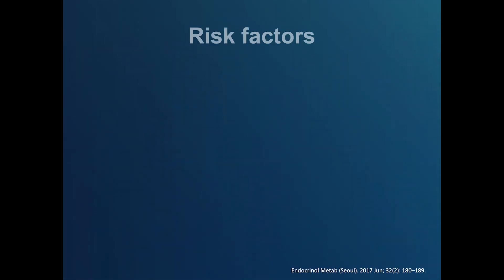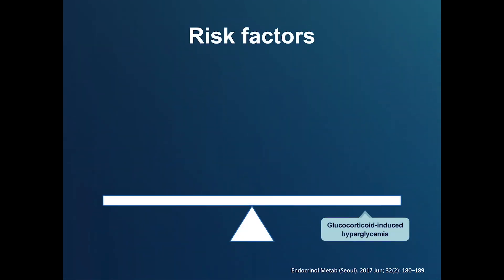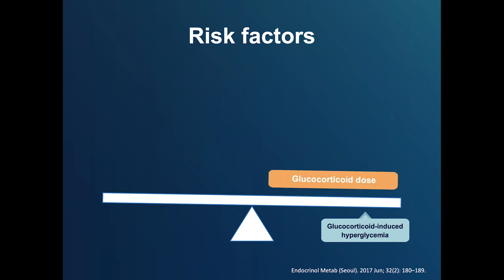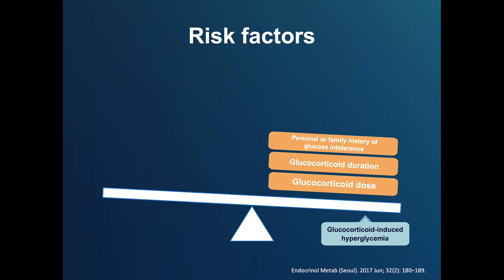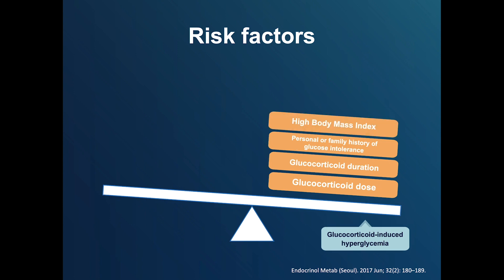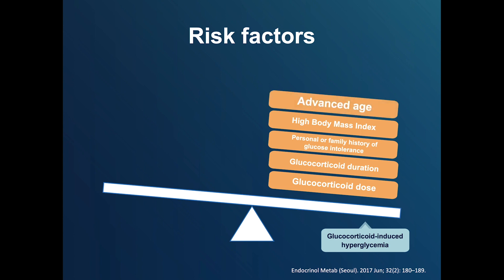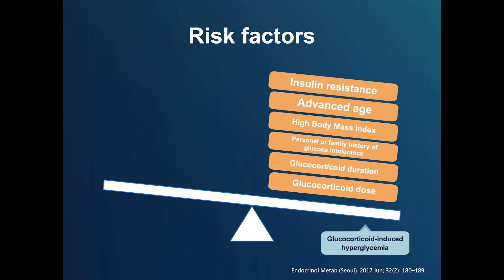For those without pre-existing diabetes, the risk of developing glucocorticoid-induced hyperglycemia depends on a combination of factors including the dose and duration of glucocorticoid treatment, and the presence of any pre-existing risk factors for type 2 diabetes, such as a personal or family history of glucose intolerance, high body mass index, advanced age, and previous signs of insulin resistance. While very high doses pose the greatest risk, even small doses can affect blood sugars, particularly if one has pre-existing diabetes risk factors.